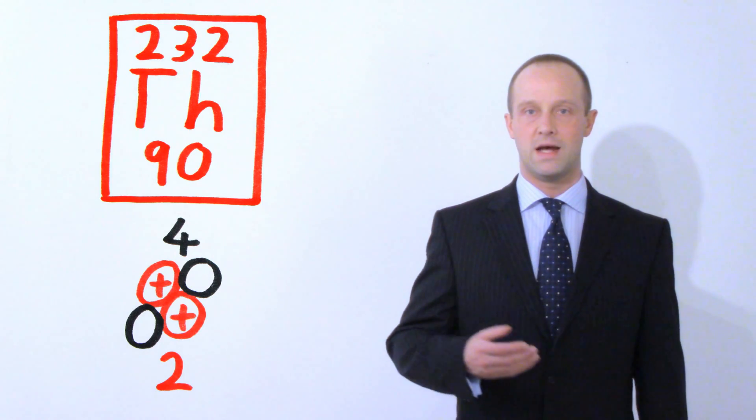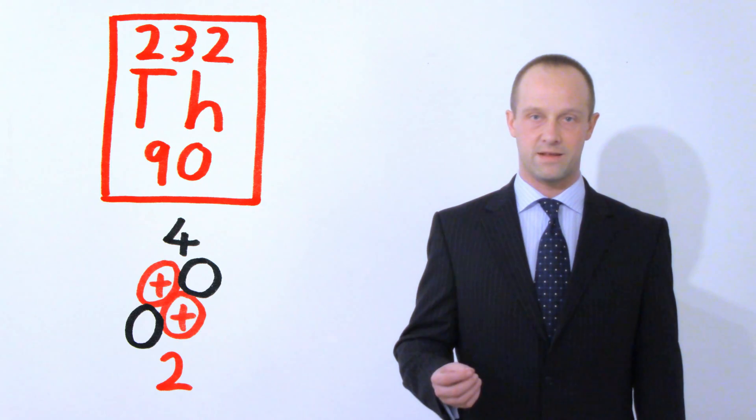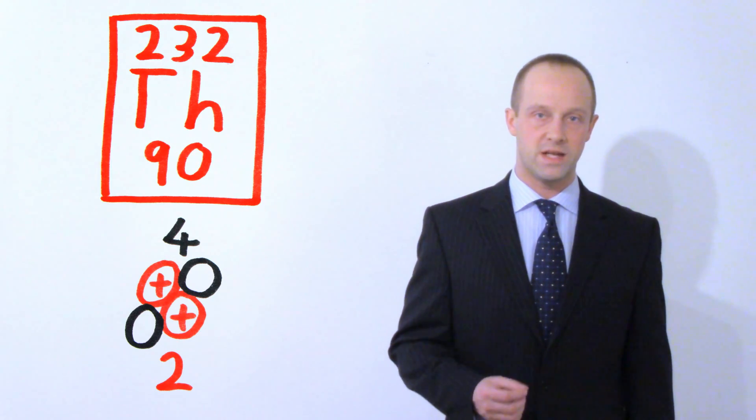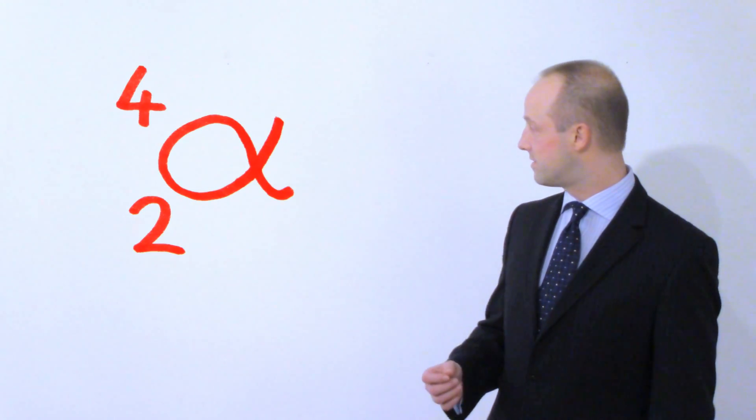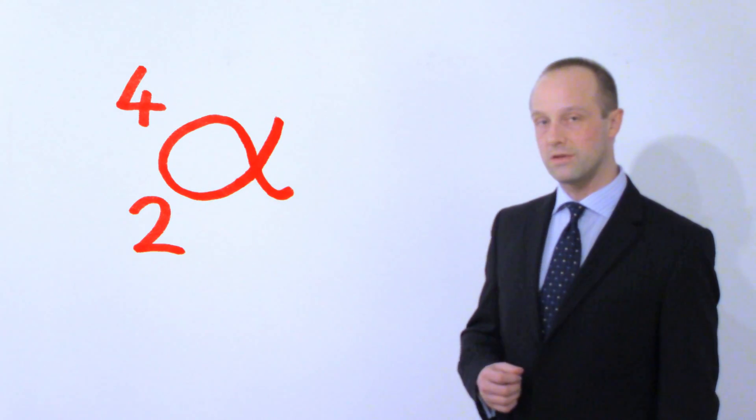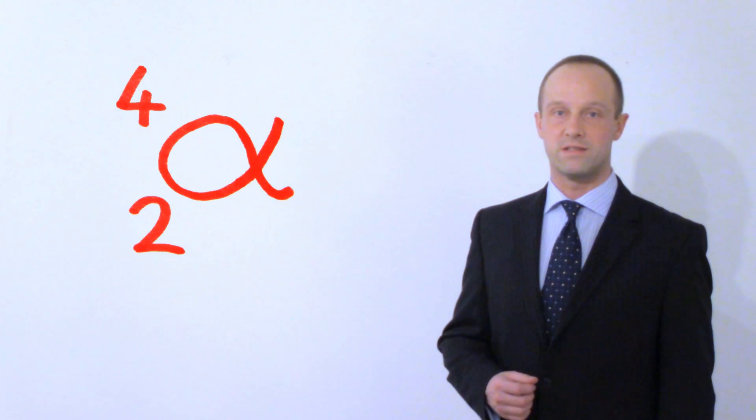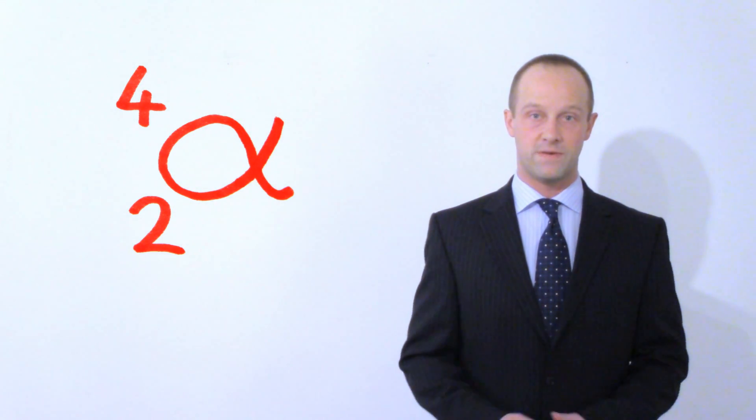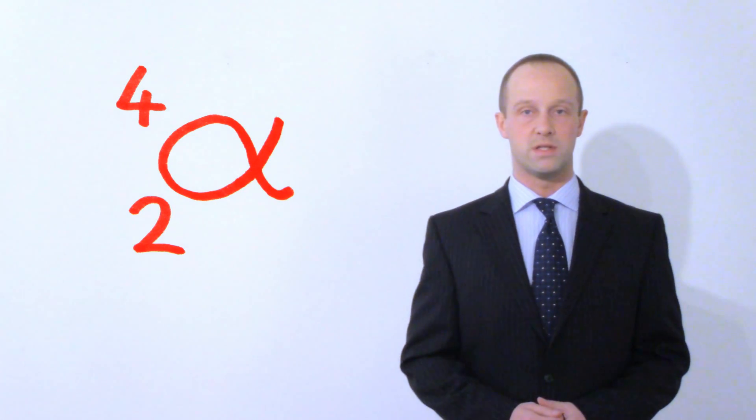That is, the mass of the two protons and the mass of the two neutrons added together. And it's got a proton number of two. So we can represent our alpha particle like this. We have the symbol for an alpha particle and we have a four for the mass number and a two for the proton number. This is exactly the same as you'd put for helium, only with the alpha symbol instead.